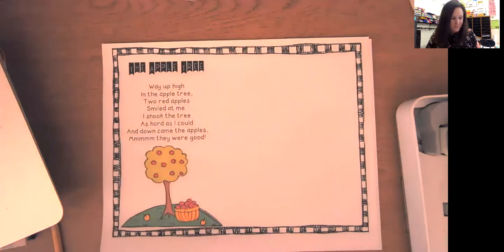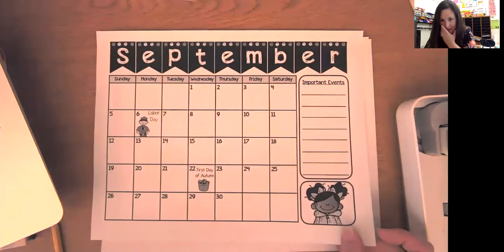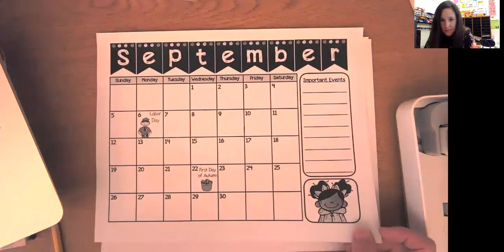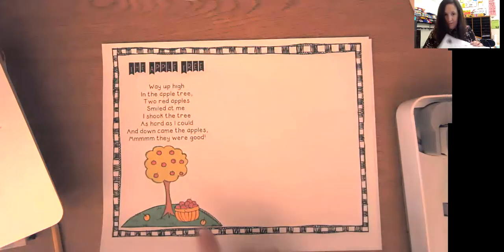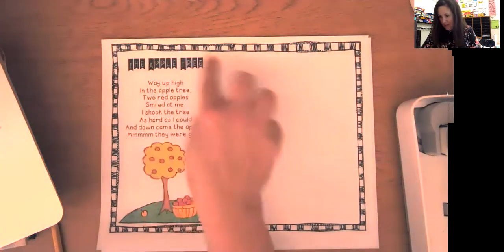Hi there, boys and girls. It's Mrs. Holmes, and we are here to do our special little gift for our parents. So what I need you to do is find in your calendar the page that says September, and then you're going to notice the little apple tree here. So that's what we're going to be working on. It says the apple tree.